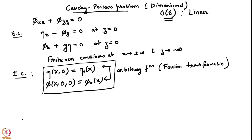We are looking at the order epsilon problem, so it is a linear problem looking at waves in deep water. We are asking the question: if we put an arbitrary interface perturbation of the form η₀(x) and some velocity potential impulse at the surface at z=0 and t=0, φ₀(x), then what waves are created at later time t, and what is the velocity potential in the body of the fluid? Let us employ Fourier transforms for this.